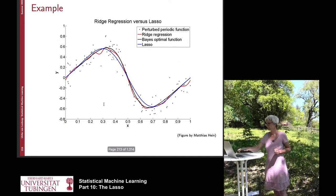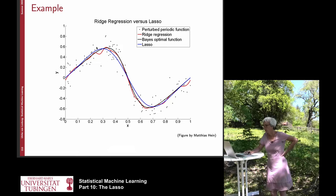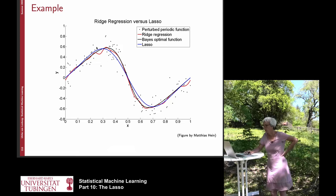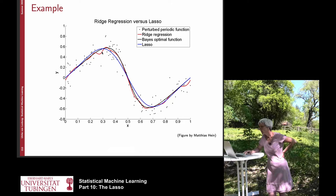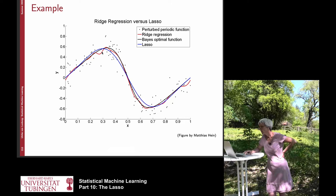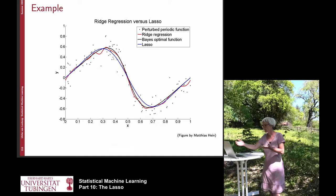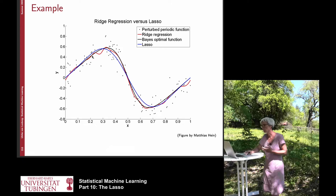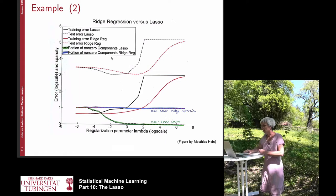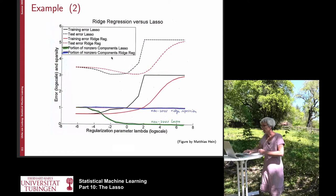I want to show you one example — the same as we have seen before. Again we have a sine wave that we want to fit. We have black points as data points, the black line is the Bayes optimal function (the regression function), the red line is the ridge regression function, and the blue line is the LASSO function. The interesting thing is this plot which shows how the different kinds of errors behave and also the number of non-zero components.